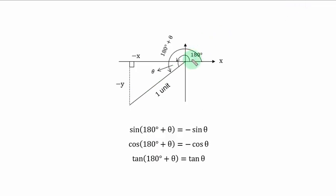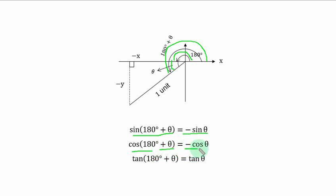In the second approach to the third quadrant: this angle here is 180 degrees, angles on a straight line. This remaining part is theta, so the whole angle becomes 180 degrees plus theta. So we have: sin(180 degrees plus theta) is equal to negative sin theta, cos(180 degrees plus theta) is equal to negative cos theta, and tan(180 degrees plus theta) is equal to tan theta.